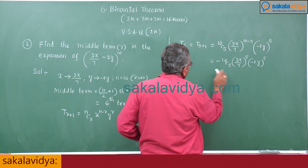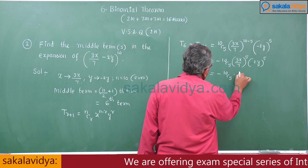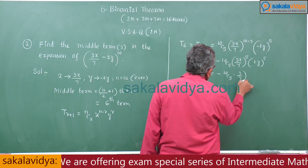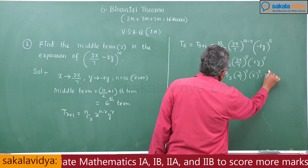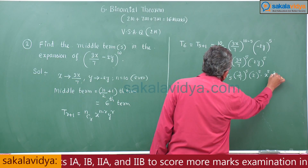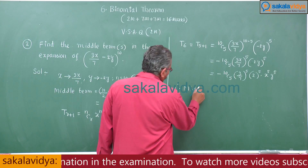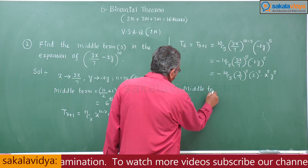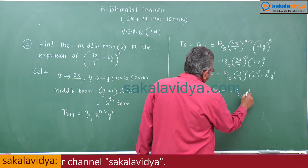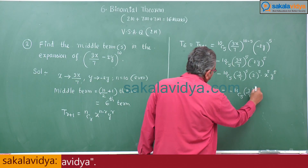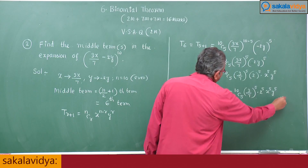This can be written as: −10C5 · (3/7)^5 · 2^5 · x^5 · y^5.